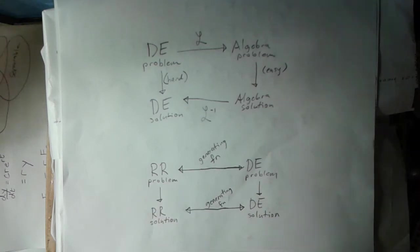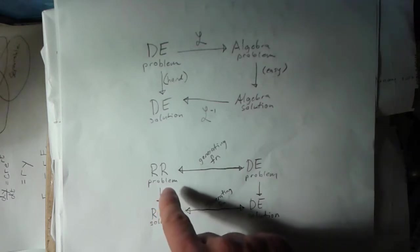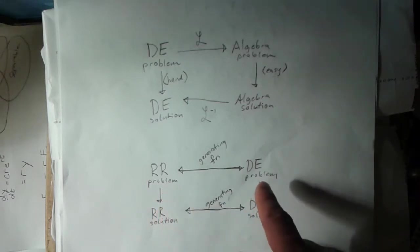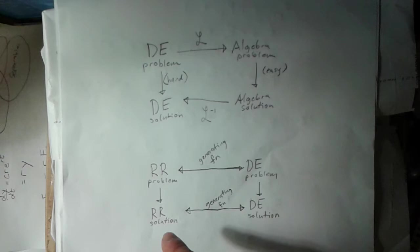With a generating function, you can turn a recurrence relation problem into a differential equation, solve the differential equation, and use the generating function to get back to your recurrence relation solution.